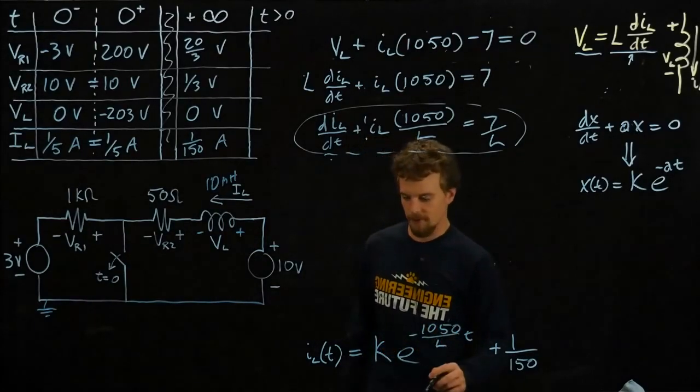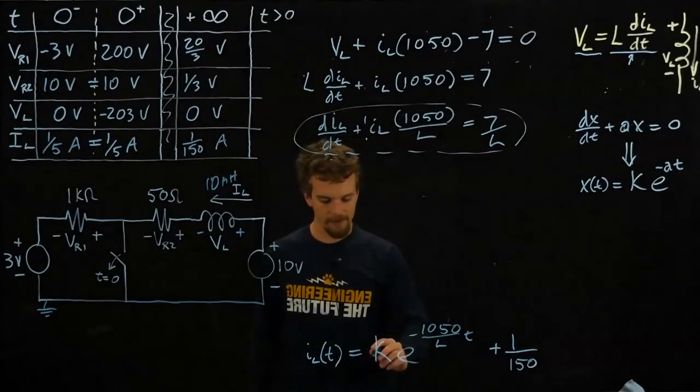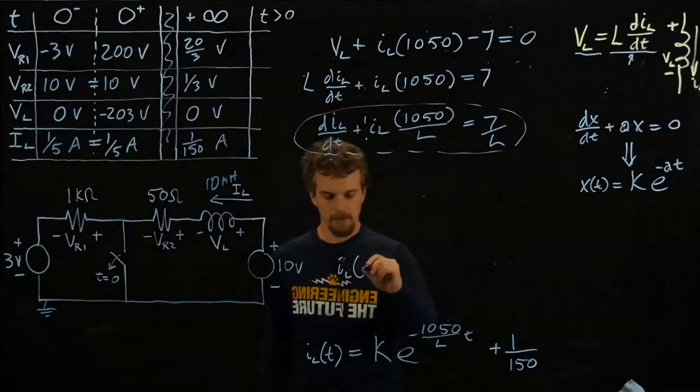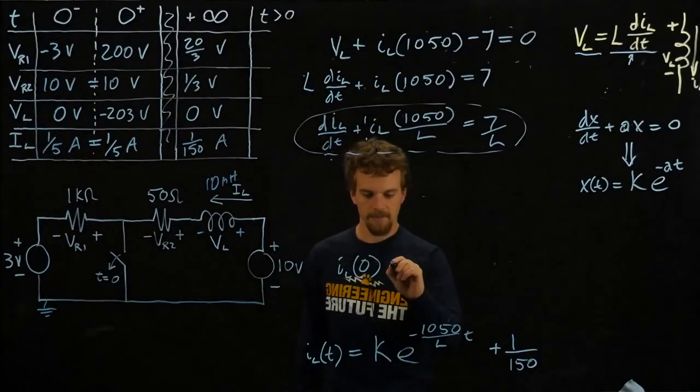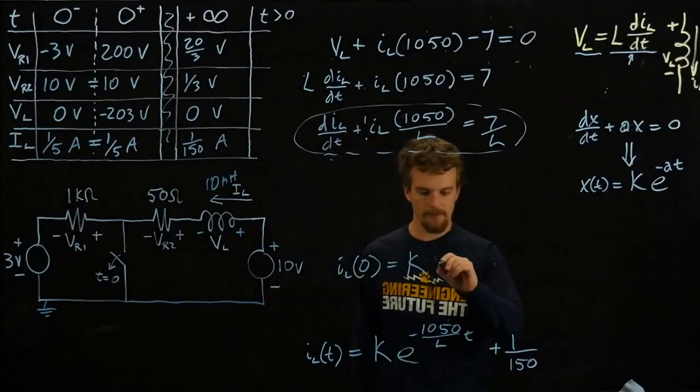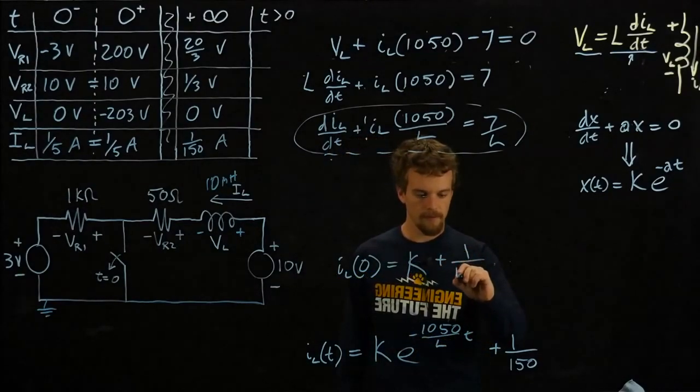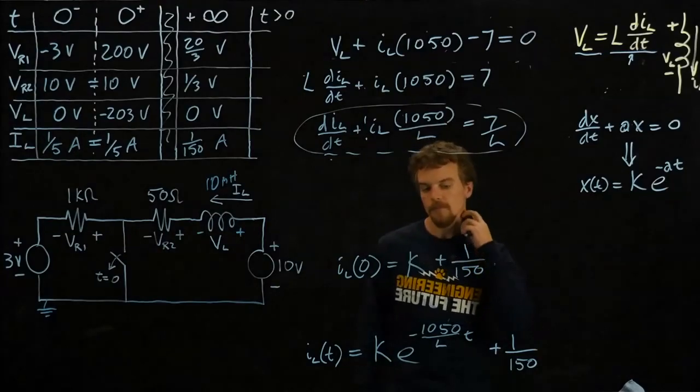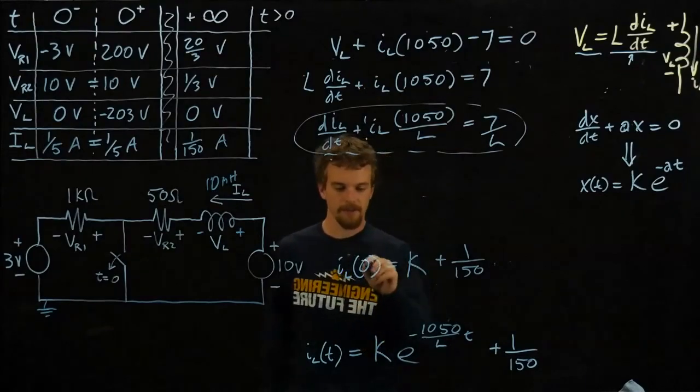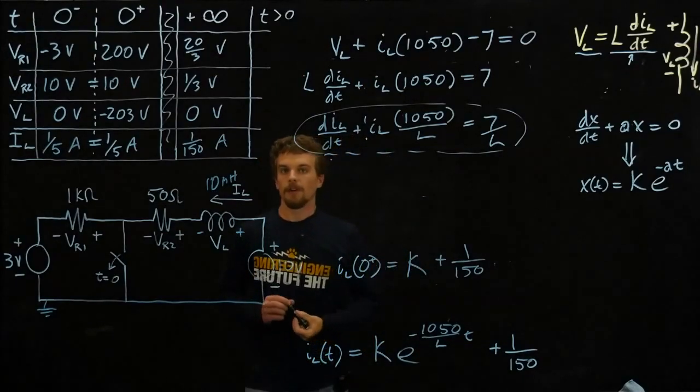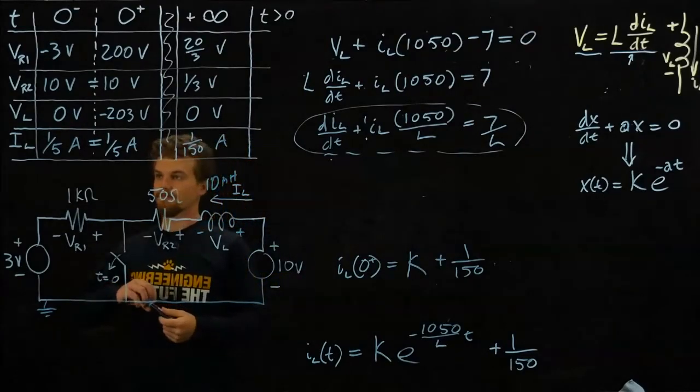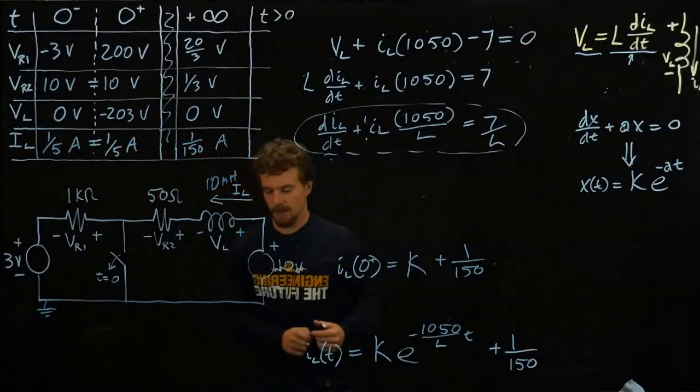If we substitute in t equals zero here, what is e to the zero? E to the zero is one. So at t equals zero, our equation just looks like IL of zero is equal to k, this whole term goes to one, plus one over 150. So what is, we should know a value for this because we filled in this chart. What is IL at time zero? We see that it is one fifth of an amp.